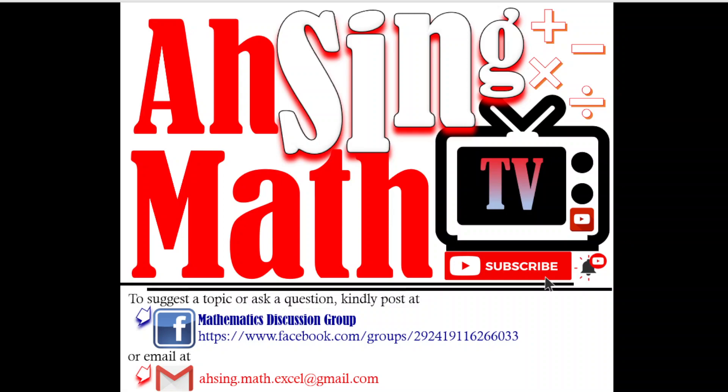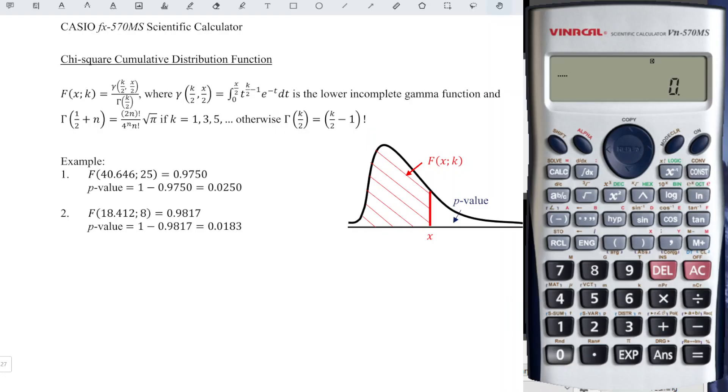Hi, this is AXING. You are now watching AXING MAD TV. In this video, we will learn how to obtain the p-value of a chi-square distribution. Before we are able to obtain the p-value, we have to learn how to obtain the cumulative probability distribution.